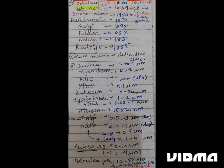RBC 7 micrometer in diameter, PPLO 0.1 micrometer, Eukaryotes 10-20 micrometer, Typical Bacteria 1-2 micrometer.